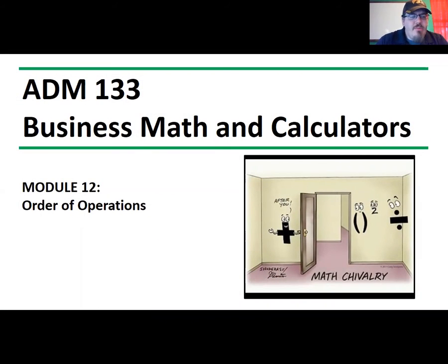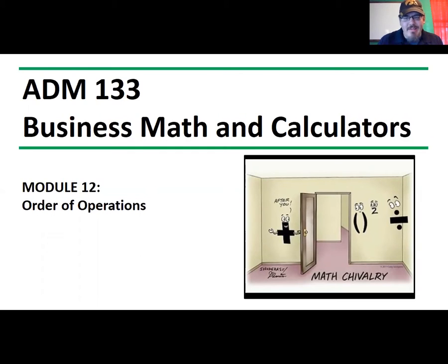Let's start talking about order of operations. There are basically four main steps. The first step is working with grouping symbols, or parentheses as it's often stated. There are different types — regular parentheses, square brackets, squiggly brackets, and other ways to group things together. Grouping symbols is the general term that refers to any of those symbols that group operations together to be done first.